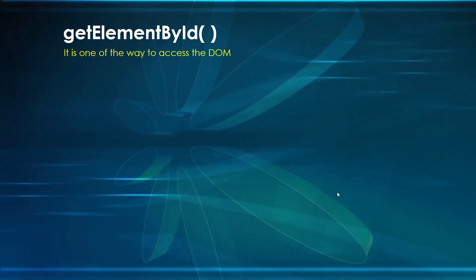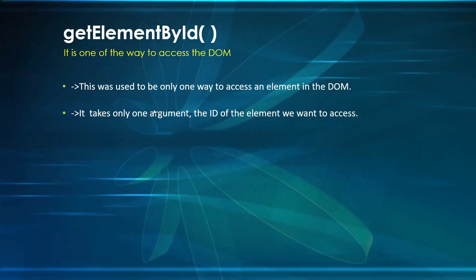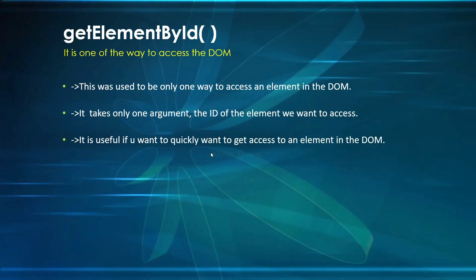getElementById is just one of the ways to access the DOM. Previously, this was the only way used to access DOM elements, but now we have multiple ways to access elements inside the DOM. As we have seen, it takes only one argument — the ID of the element we want to access. If we have different IDs for different elements, we can access them, but individually, one by one. If you want to access only one element and see its result, you can easily use getElementById by passing its ID directly.